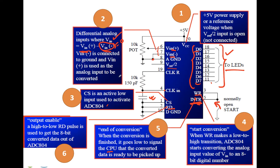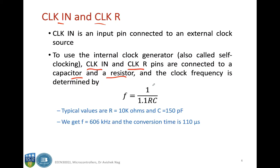To use the internal clock generator — also called self-clocking — the clock in and clock R pins are connected to a capacitor and a resistor. This connection shown here is basically for internal clocking. If you are using an external clock, then clock in should be connected to that external clock source. Otherwise this RC arrangement is used to generate an internal clock, and the frequency of this clock is given by the values of the resistor and capacitor.